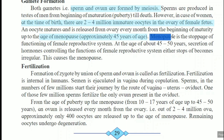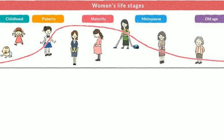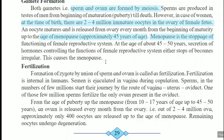Menopause is the stage in which all reproductive system functions get stopped. The age of menopause is about 45 to 50 years. Why does menopause happen? Because the hormones — estrogen, progesterone, luteinizing hormone, follicle stimulating hormone — play a very important role. Secretion of all these hormones, which control the functions of the female reproductive system, either stops or becomes irregular, and that leads to the menopause situation in females.